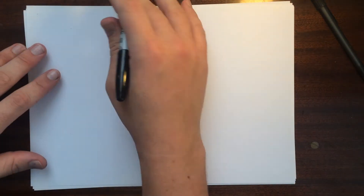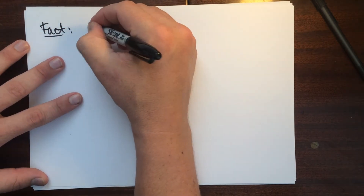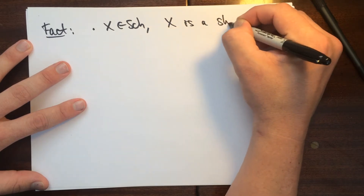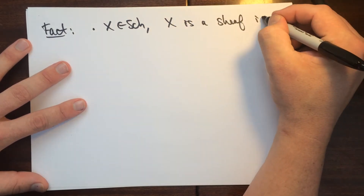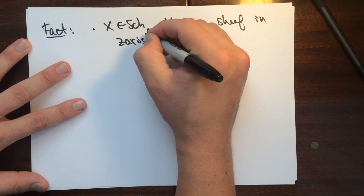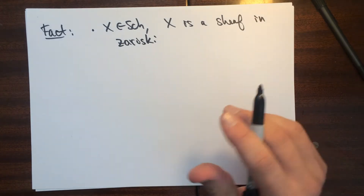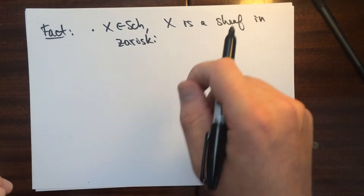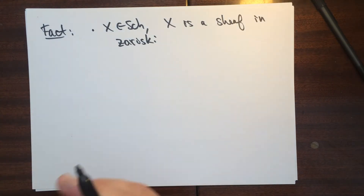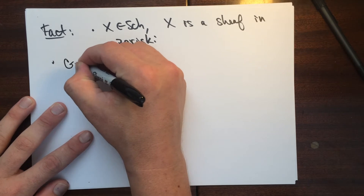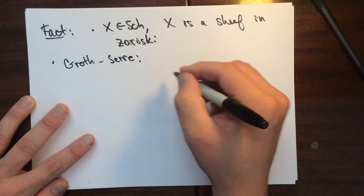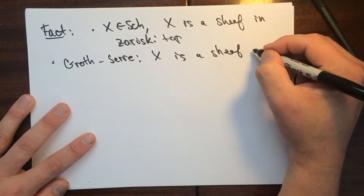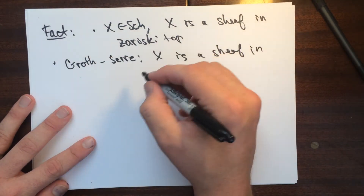There's another fact: if x is a scheme, then x is a sheaf in the Zariski topology. So you can glue together morphisms — morphisms from y into x can be obtained by looking at a covering of y, then mapping all those pieces in, and making sure they're compatible. There's another theorem by Grothendieck in SGA which says that x is a sheaf in the FPPF topology as well.